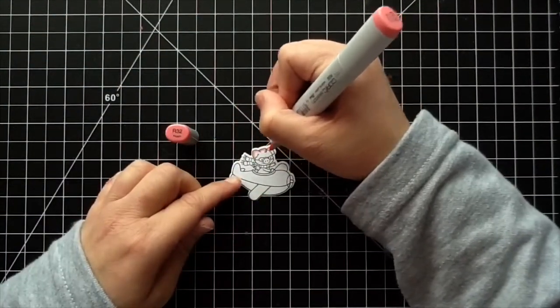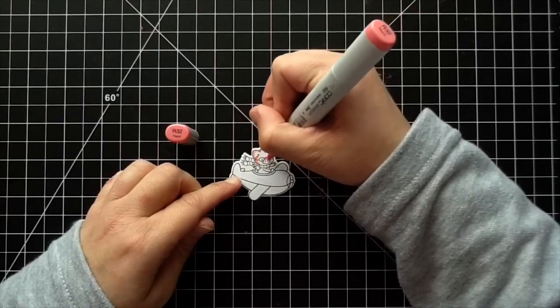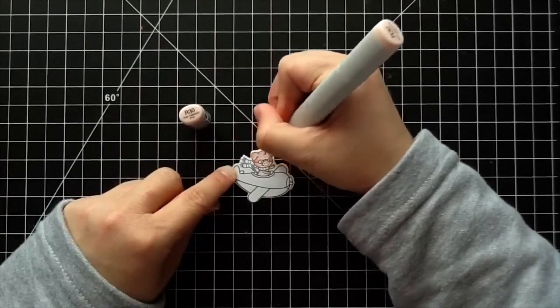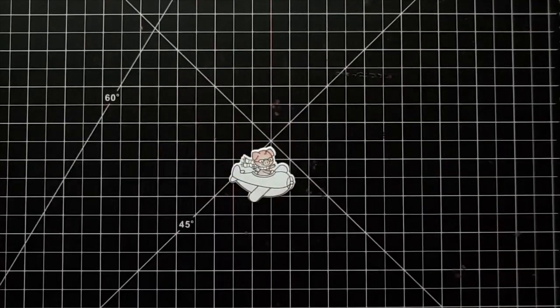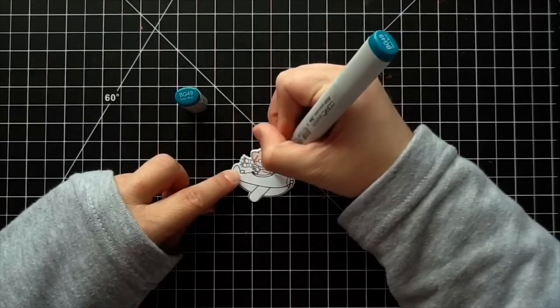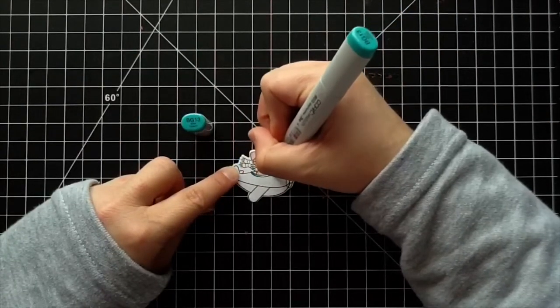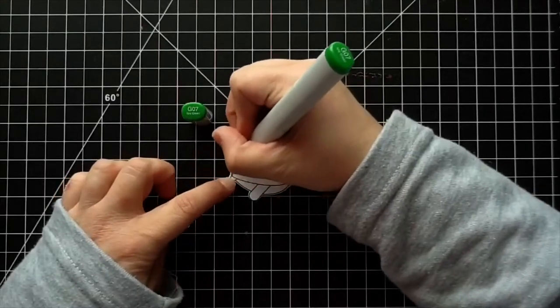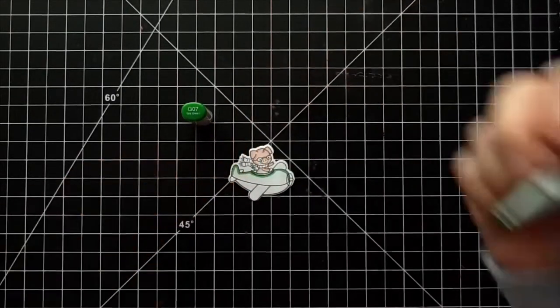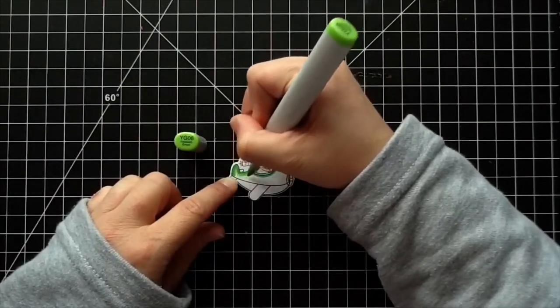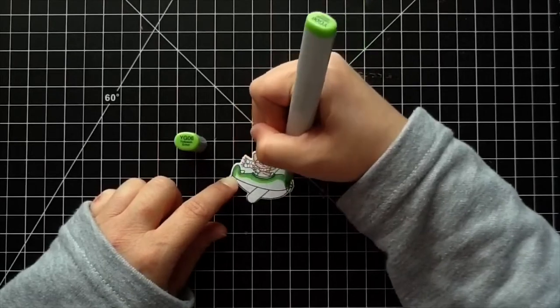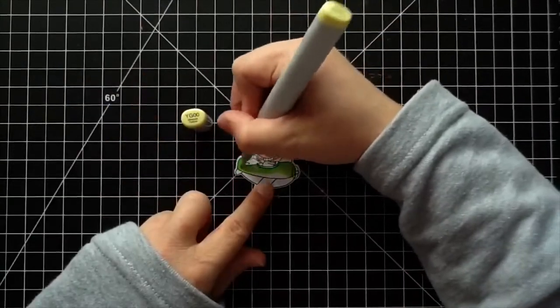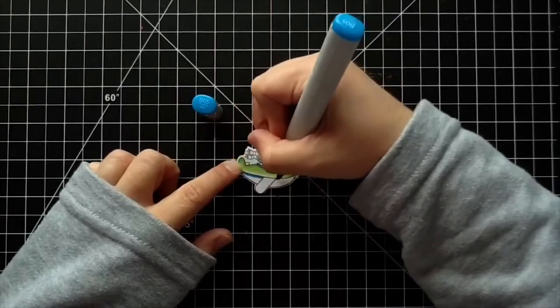So to begin with, I'm going to be using Copic markers. I'm using R32 for the pig, and this is one of my favorite color combos for coloring pigs. It looks just like the real color of pigs. Then I'm going in with R30. For the little wings, I'm using B000. For the blue part here, I'm using B49, B13, and then B10. For the other part of the plane, I thought it'd be super cute to do green, so I'm using G07, YG06, YG03, and YG02. I just cannot get over how cute this little pig is. I love coloring pigs. This is a really cute set for any occasion and I think it would be so precious for a baby card.